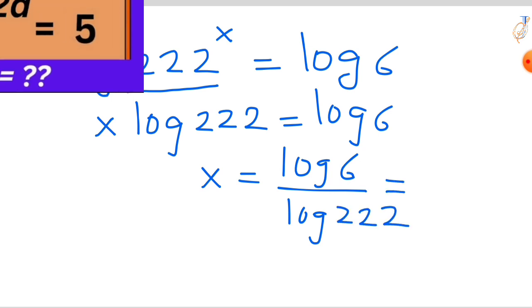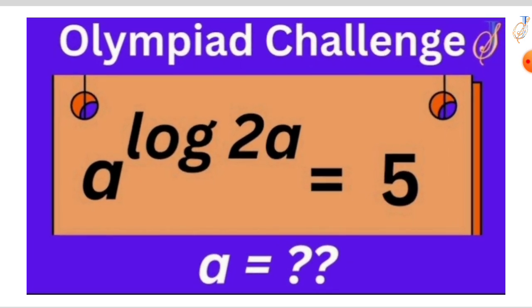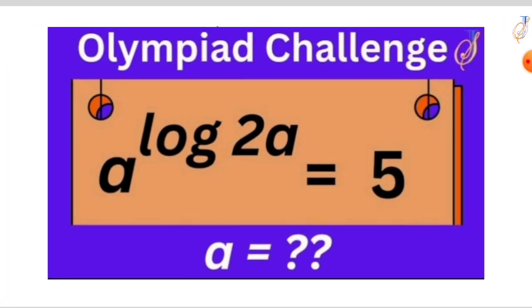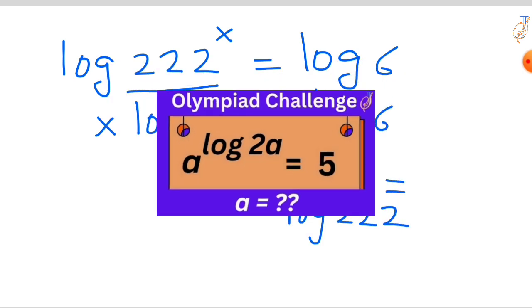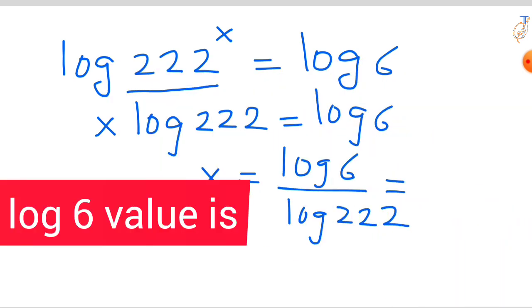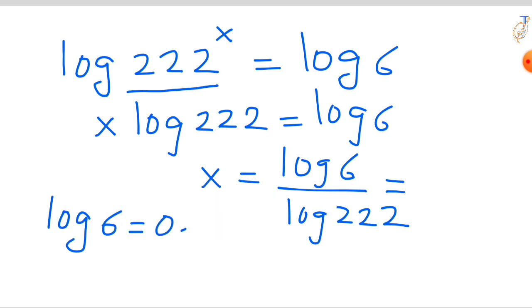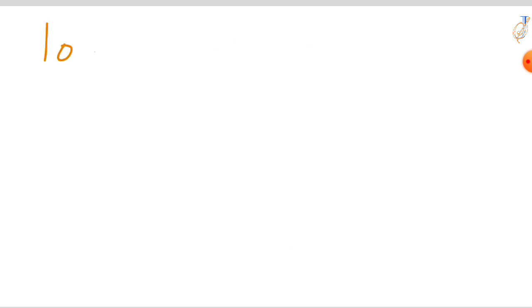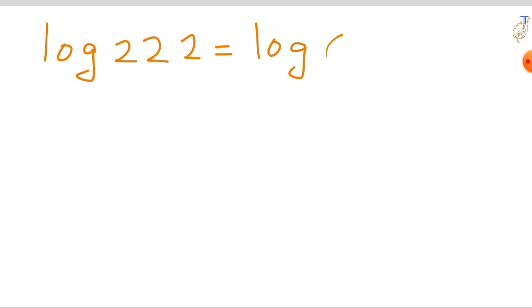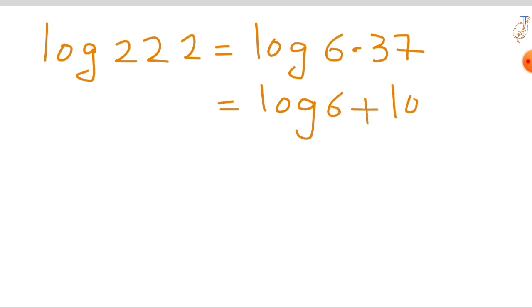Now we need to find this value. In a previous video I explained how to find log values from 1 to 10 without a calculator. The log 6 value is 0.7781. Now let's find log 222 without a calculator. We know that 222 equals 6 times 37. So instead of 222 we can write log(6 times 37), and using the product rule, log(ab) equals log a plus log b.